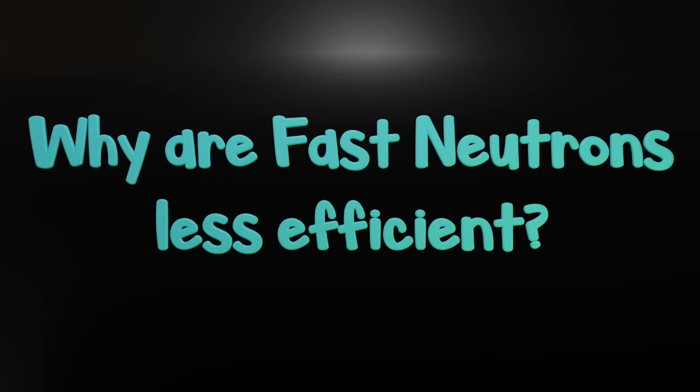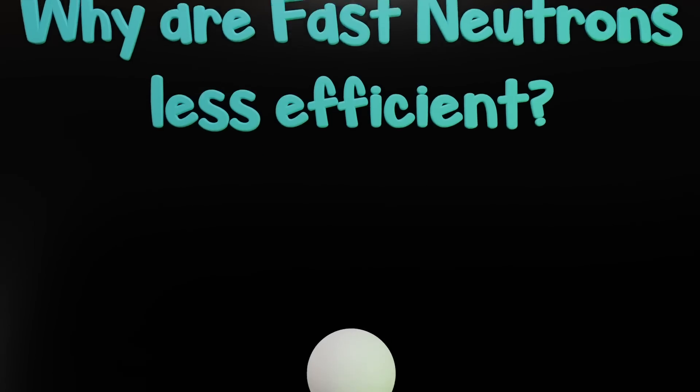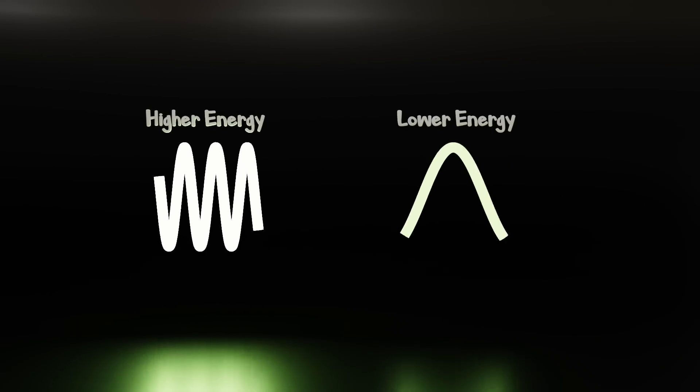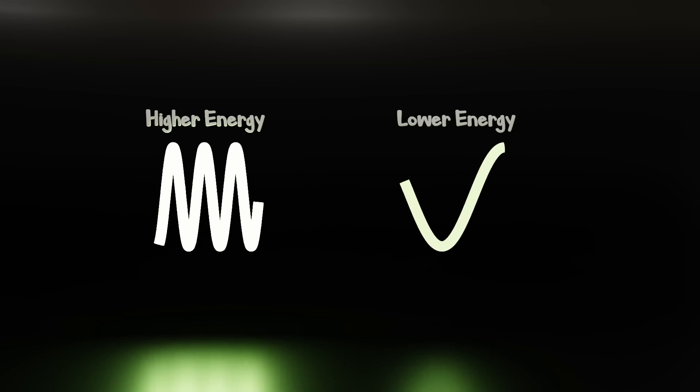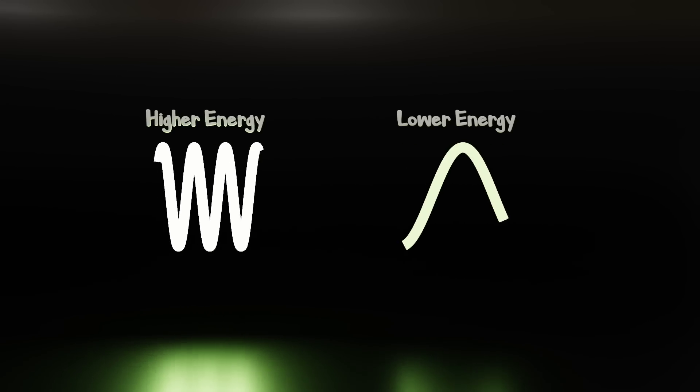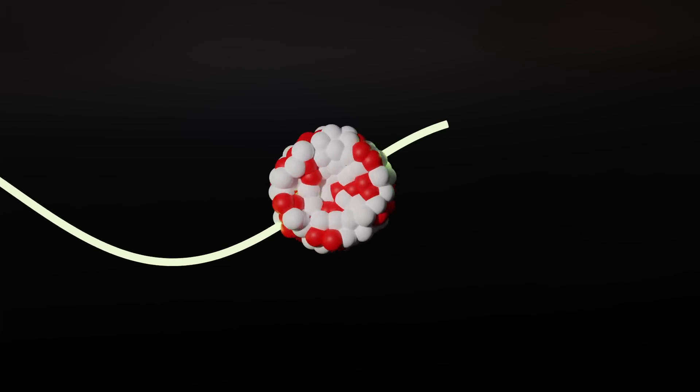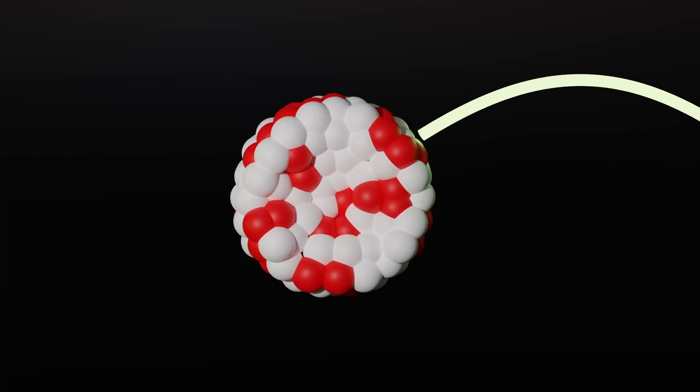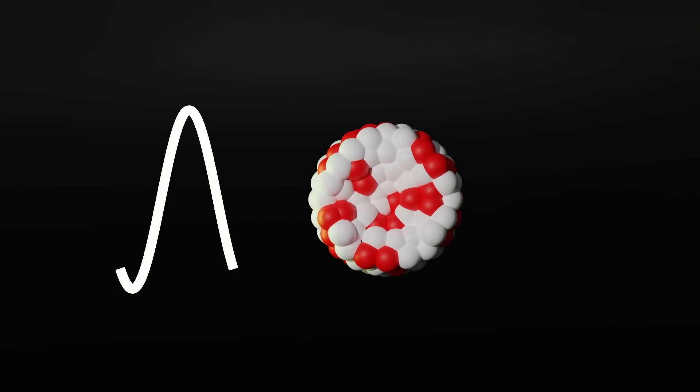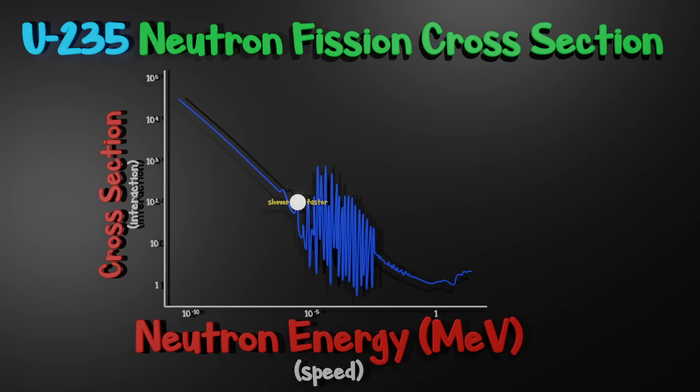The first question to ask is, why are fast neutrons less efficient? This comes down to the quantum nature of matter and that particles also move as waves. Higher energy wavelengths are shorter, whereas lower energy wavelengths are longer. Thus, when passing through a nucleus, it's more likely the slower-moving, longer de Broglie wavelength of the lower energy neutron will interact than the faster-moving, shorter de Broglie wavelength of a higher energy neutron.